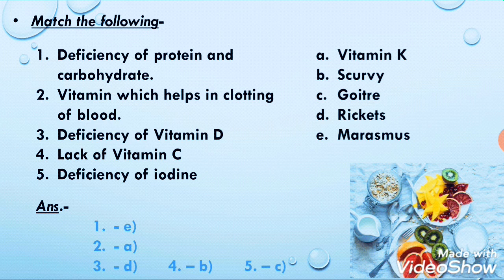Next, third one: deficiency of vitamin D. Vitamin D की deficiency से क्या होता है — vitamin D is needed to make our bones strong, and the bones-related disease given here is rickets. Yes, rickets is the correct answer.